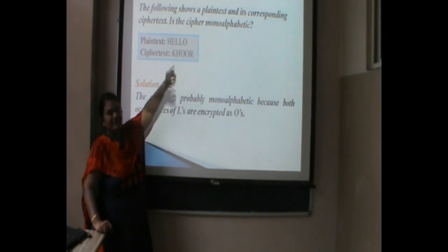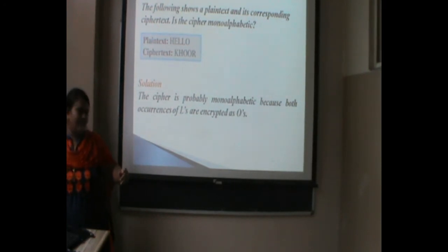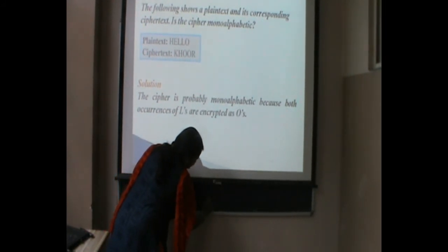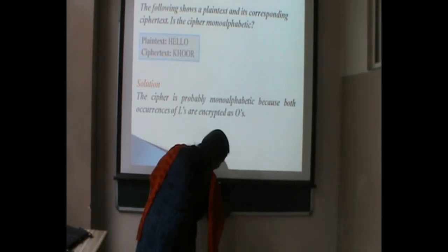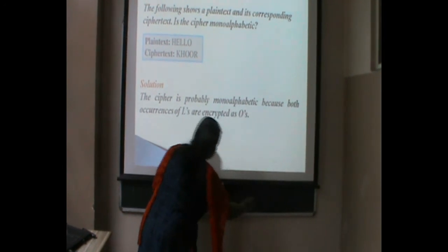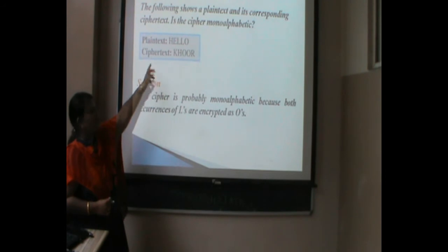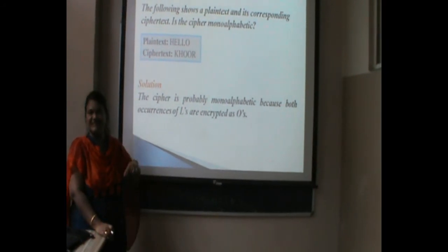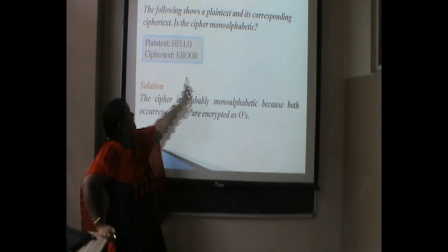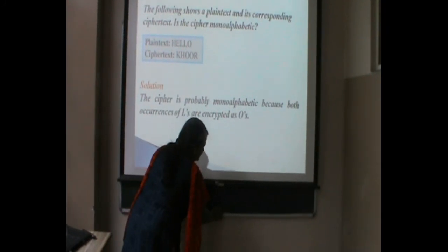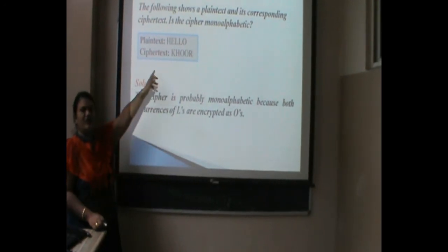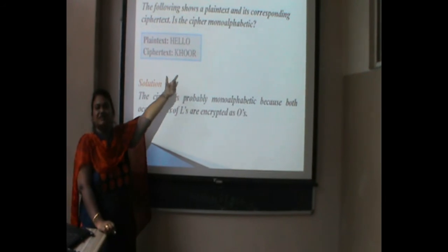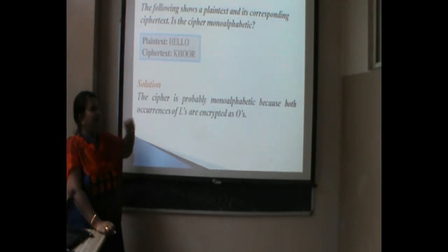Each character in the plaintext is replaced by shifting three places down — that is, the key is 3. For example, H is replaced by K (shift 1, 2, 3). Then E is replaced by shifting 3 places down, so E becomes H. Likewise, we get the ciphertext. This is the substitution cipher technique — also known as shift cipher or Caesar cipher. The key is given as 3 most of the time, but in the exam, the key may not be given and we have to find it. For a key of 15, we calculate by representing the 15th shifted character.